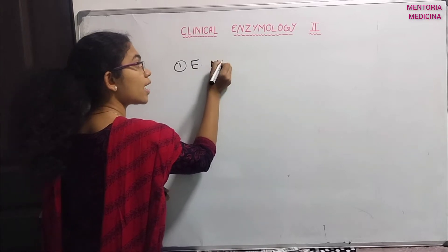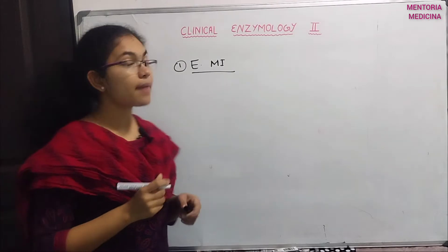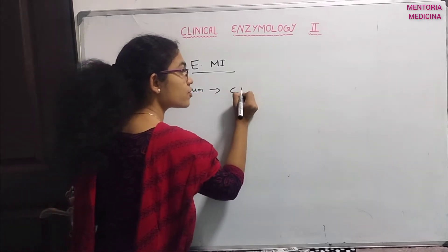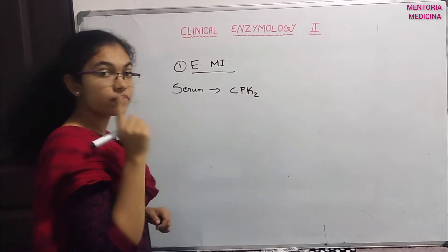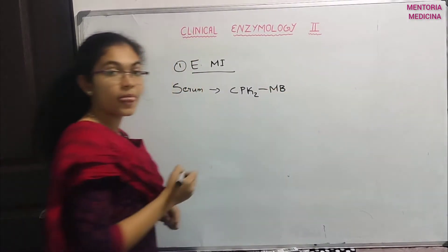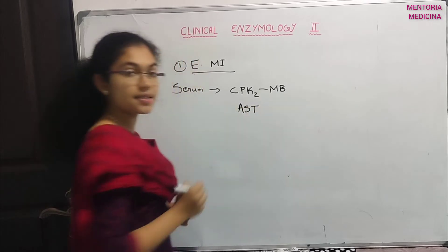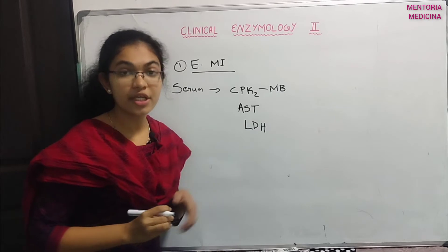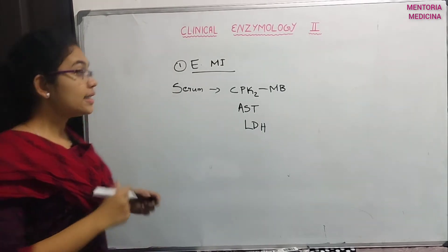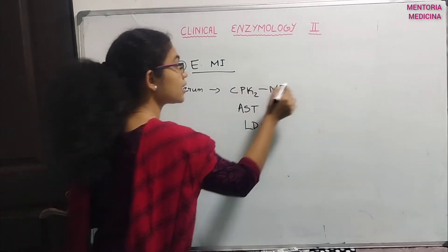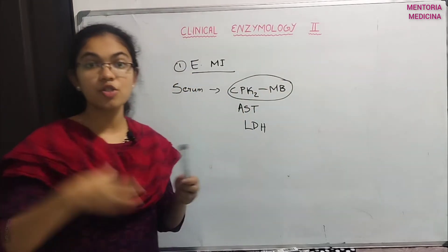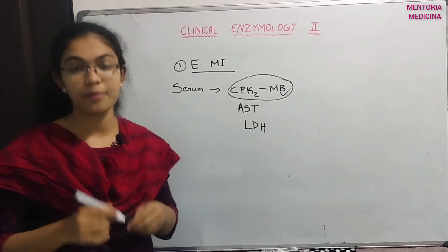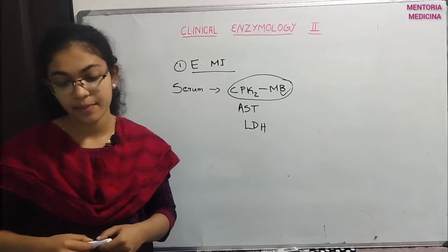Enzymes of myocardial infarction — in myocardial infarction, the relevant enzymes are aspartate aminotransferase and lactate dehydrogenase. For early diagnosis, creatine phosphokinase-2 (CPK-2) is used, as it will be elevated in myocardial infarction patients.